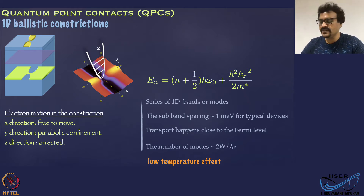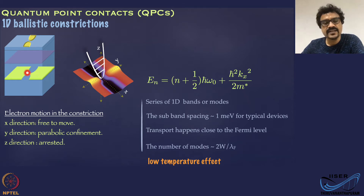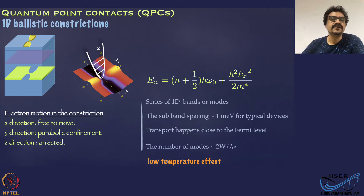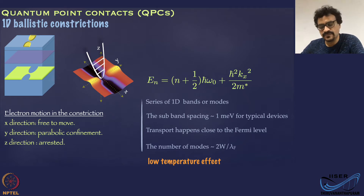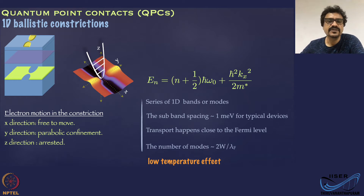You start with a two-dimensional semiconductor heterostructure, which we have discussed in previous lectures. Then you realize a thin one-dimensional channel in the middle by the technique of electrostatic gating, which we have also discussed in detail. The semiconductor structure could be gallium arsenide/aluminum gallium arsenide based, or silicon-silicon germanium based, or you can have a two-dimensional electron system based on layered materials such as graphene or any other van der Waals semiconductor.